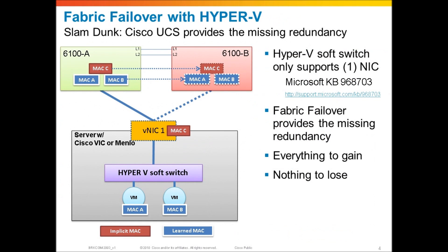Now here's where things get interesting. Let's talk about Fabric Failover with hypervisor installations — specifically Hyper-V. In version 1.4 of UCS Manager, a new capability was introduced to provide Fabric Failover for learned MAC addresses. Prior to version 1.4, it was always possible for implicit MAC addresses — that was for bare metal OS installations — but it was never a supported implementation for the learned MAC addresses that you might have from a hypervisor switch running Hyper-V or VMware. But with version 1.4 of UCS Manager, those learned MAC addresses are now supported with Fabric Failover.